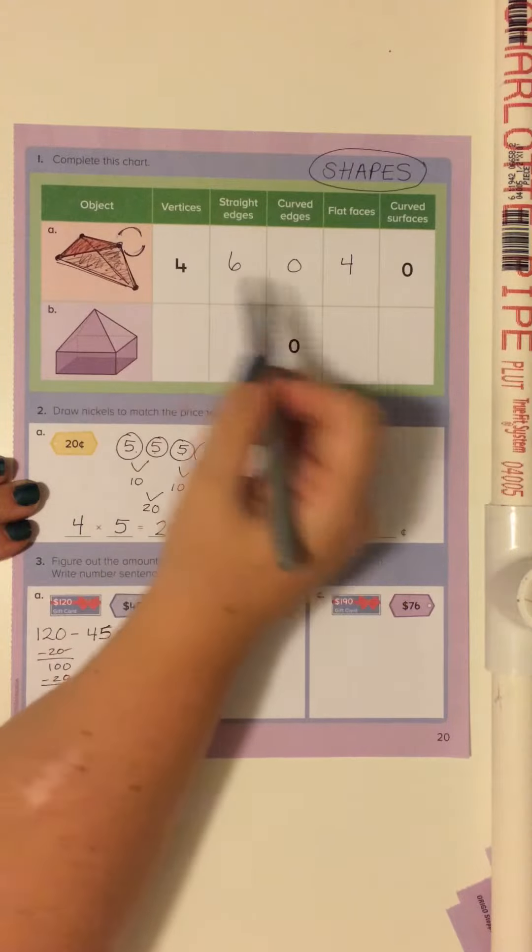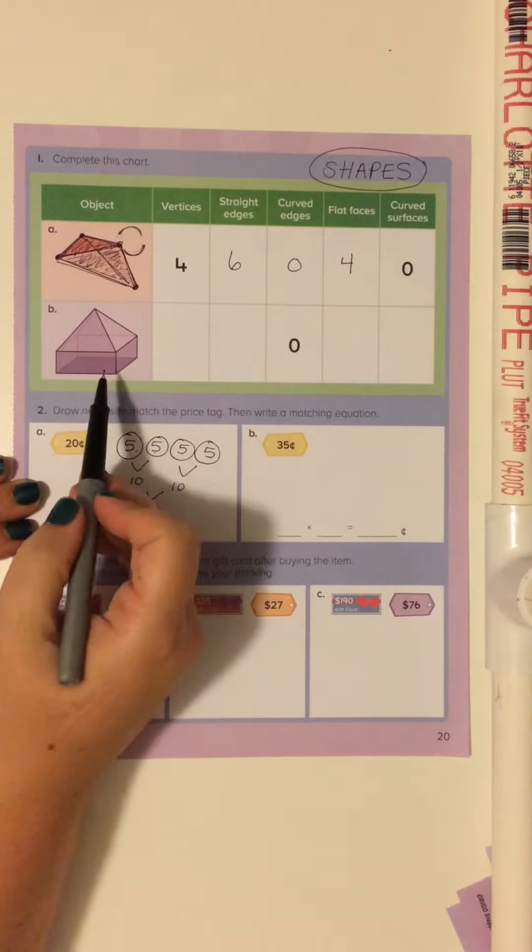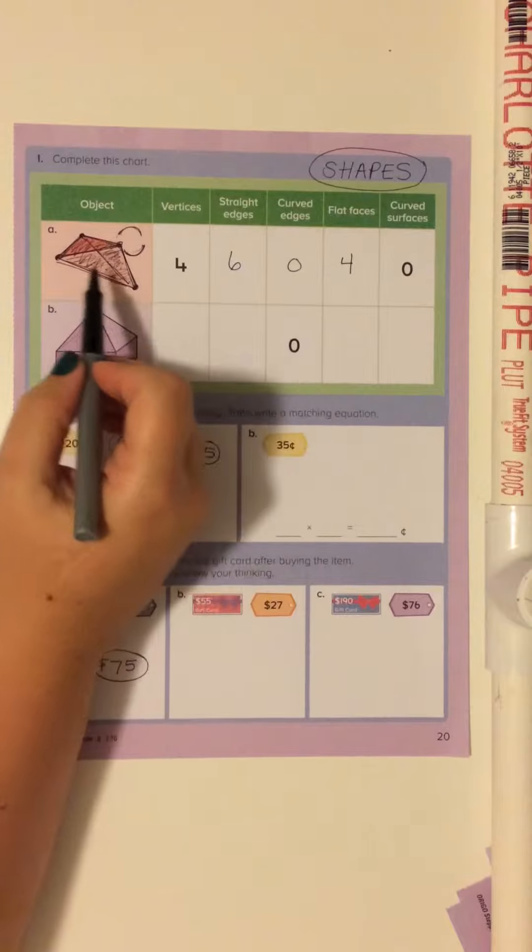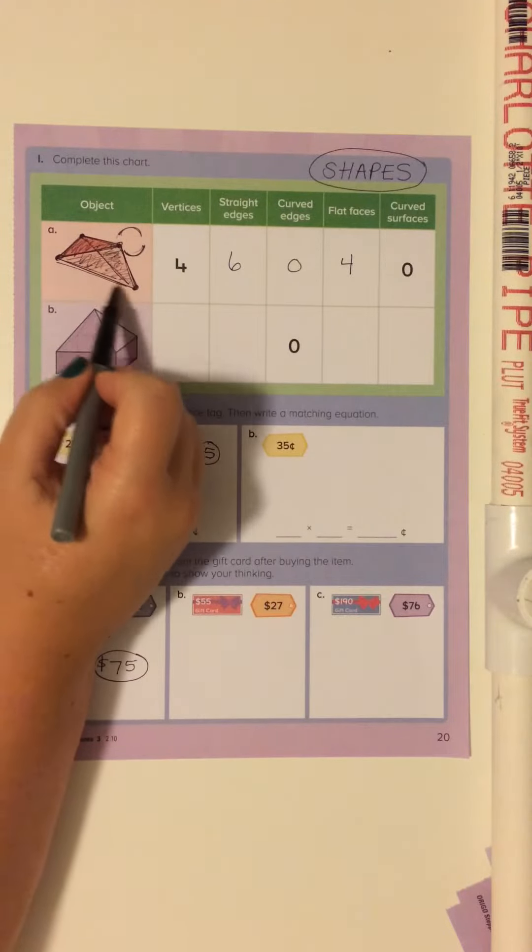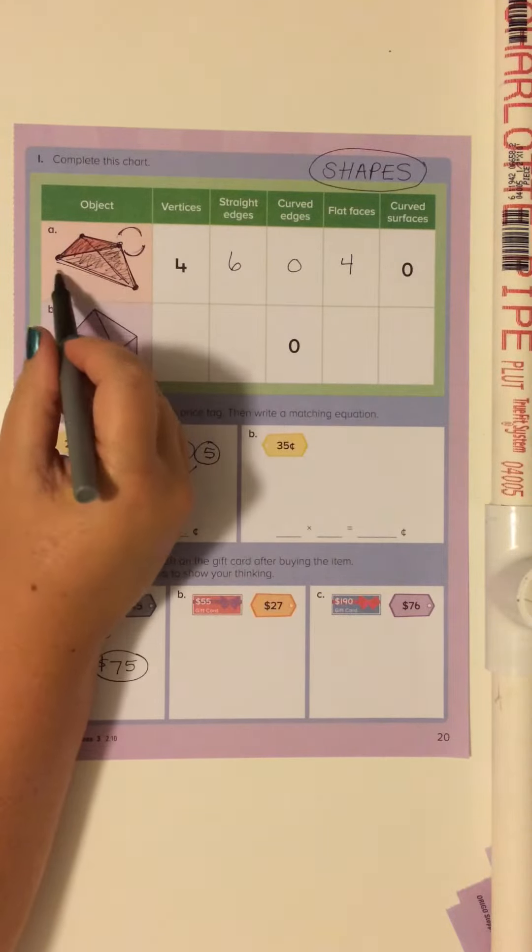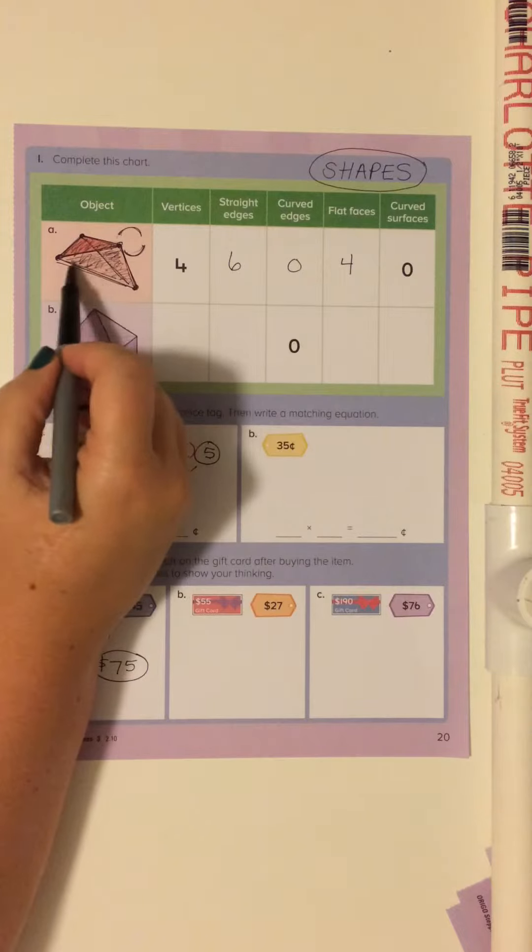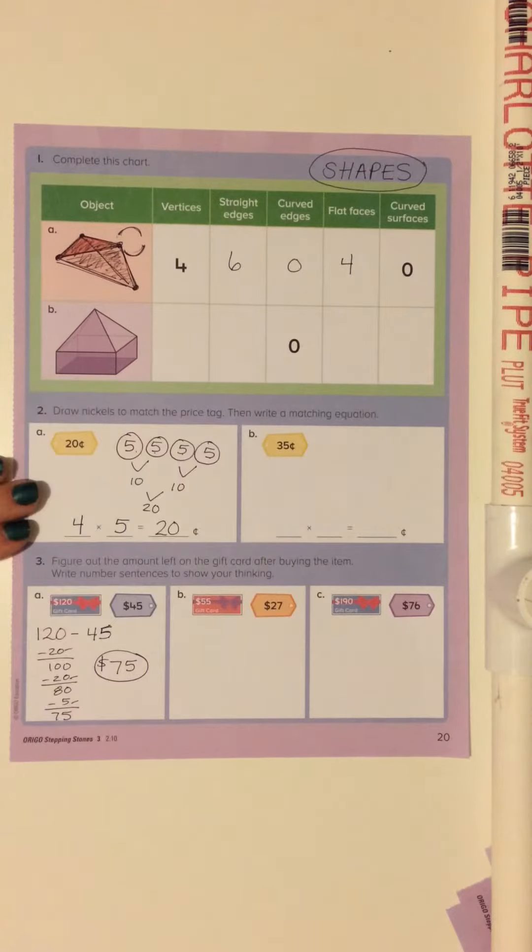And there are also no curved surfaces. This is an all straight edged shape, so there's a zero there. You're going to be doing the same thing for the bottom shape. Again, just remembering vertices are the dots, straight edges are the lines, flat faces are the panels between those straight lines.